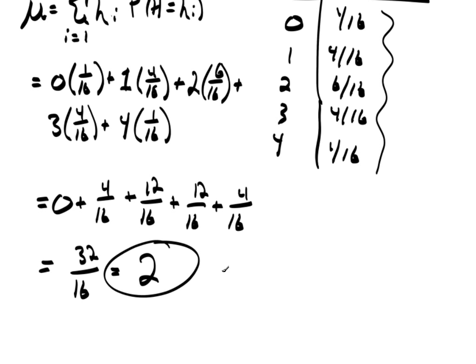So, the mean is 2, and notice that 2 is right here. It's right smack down the middle because this is symmetric. If these probabilities were not symmetric, you would not get the guy in the middle.